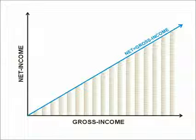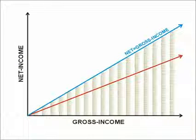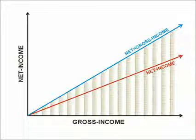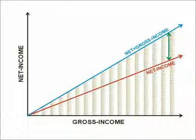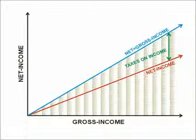If we would have a linear income tax, the red line describes our net income. Everything between the red and blue line is paid as taxes.